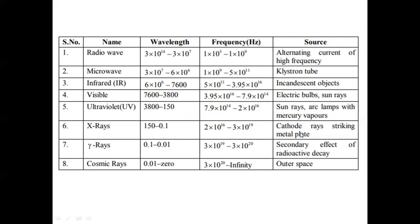Radio waves are obtained by alternating current of high frequency. Microwaves come from a klystron tube. Infrared rays come from incandescent objects. Visible rays from electric bulbs and sun rays. Ultraviolet rays from sun rays or lamps with mercury vapor. X-rays from cathode rays striking a metal plate. Gamma rays are a secondary effect of radioactive decay. Cosmic rays come from outer space.